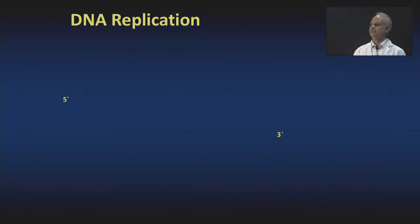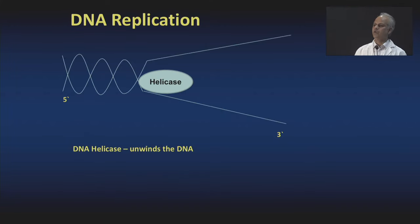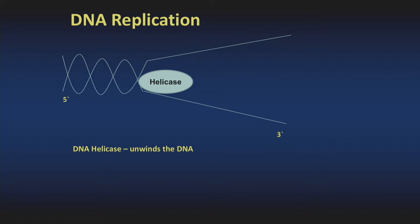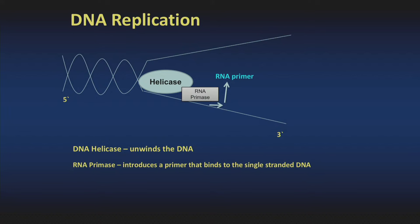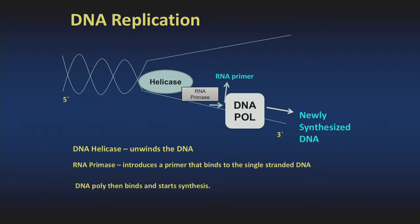If you look at what happens during a PCR, it mirrors DNA replication. During DNA replication, helicase unwinds the DNA, and RNA primase introduces a primer that binds to the single-stranded DNA — because DNA cannot replicate if it is not double-stranded. Then DNA polymerase binds to this double helix and starts synthesizing the new strand from the 5' to 3' direction. The same happens during PCR, but we incubate the sample at different temperatures.